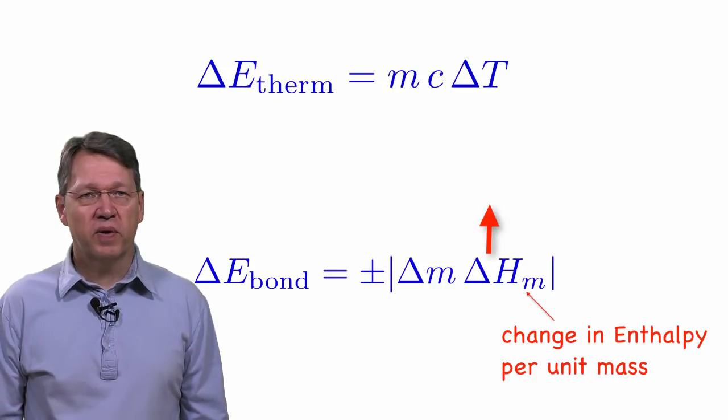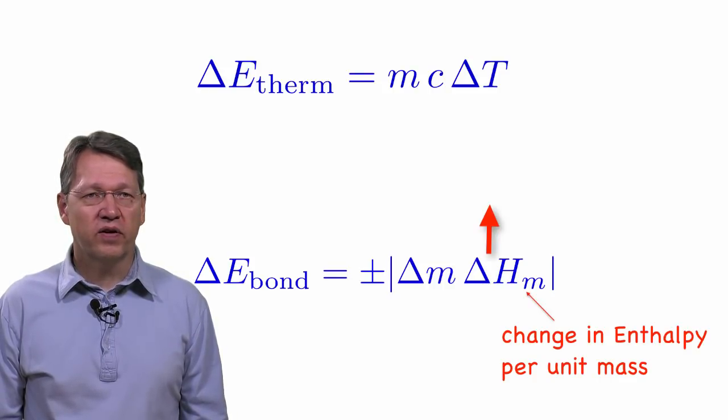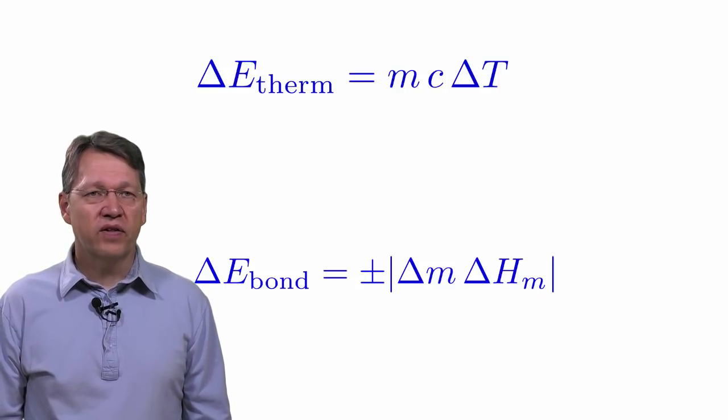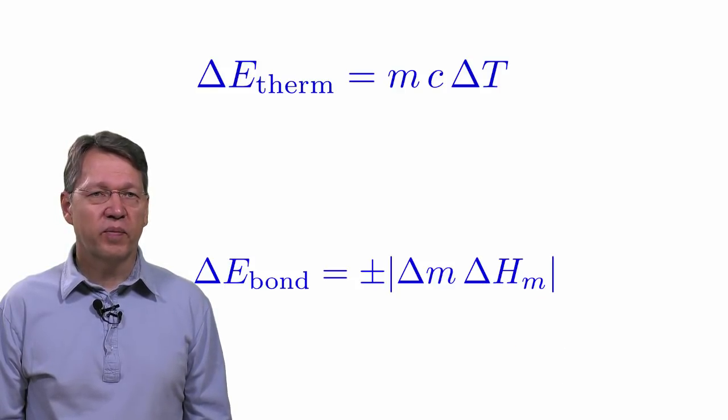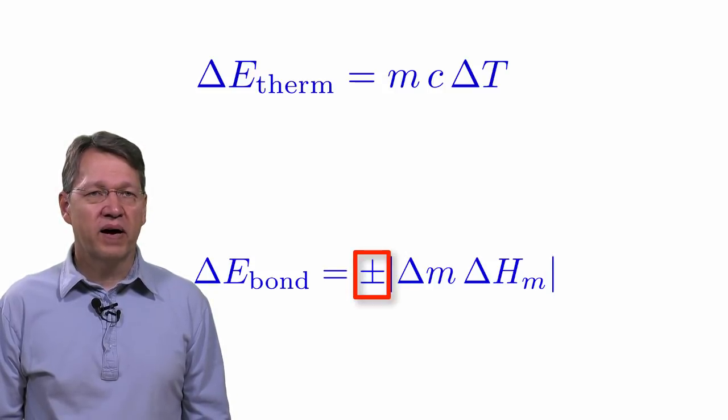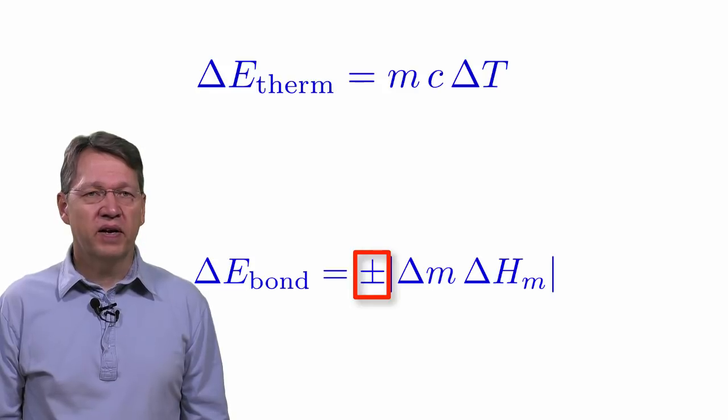Also, the change in enthalpy is positive when we melt ice to liquid water and negative when we freeze liquid water to ice. To get around all this confusion, we will write the formula with absolute values around the change in mass and the change in enthalpy and then put a plus or minus sign out front, depending on whether the bond energy is increasing or decreasing.